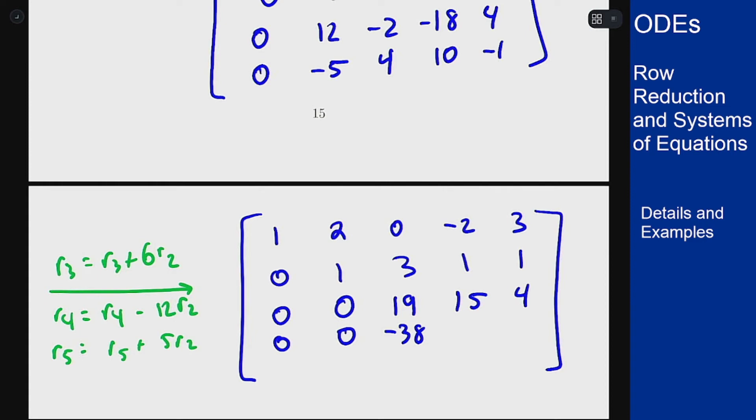Negative 18 minus 12 is negative 30. And 4 minus 12 is negative 8. And we have our last row.